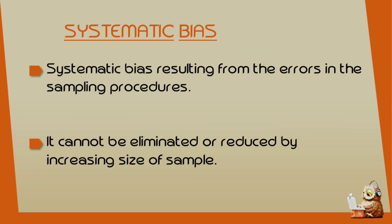What is Systematic Bias? Systematic Bias is resulting from the errors in the sampling procedure. This is the main idea. There are mistakes and errors in the sampling procedure, and these are called systematic bias.